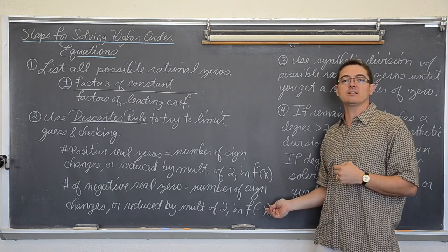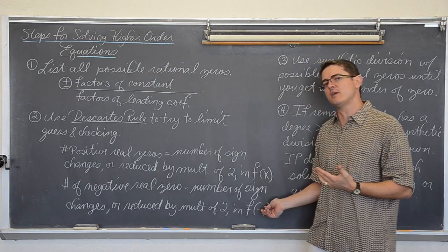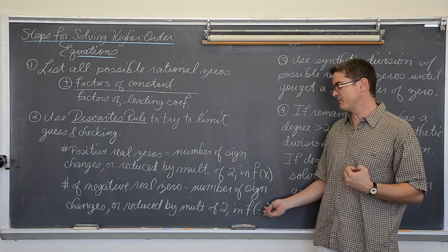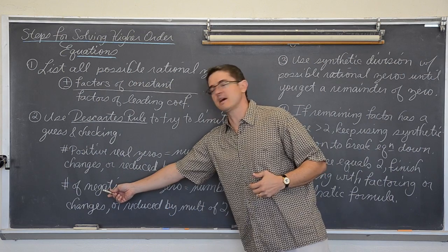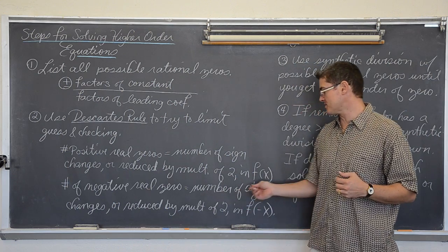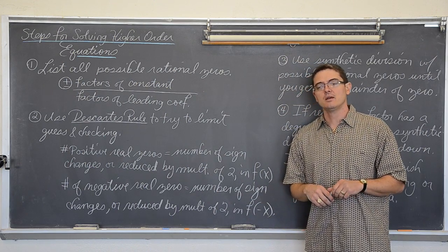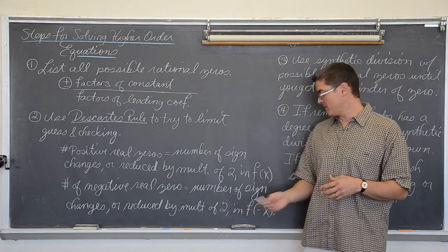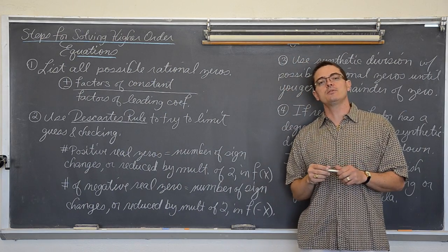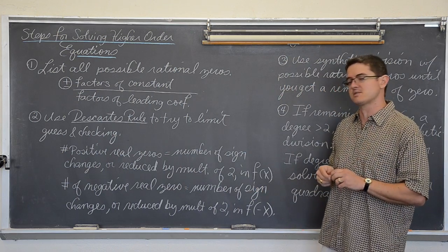Then you take your equation, plug in negative x, and re-simplify — kind of like you are checking for even and odd functions. The number of negative real zeros equals the number of sign changes in f(-x), or that number reduced by two. So if you plug in negative x, simplify, and have only one sign change, then you know you have only one negative real solution — that is where the graph crosses the x-axis.